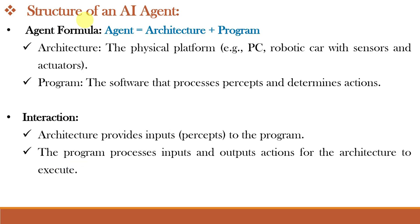An AI agent is made up of two parts: architecture and program. Let us understand the architecture first. As the name suggests, architecture means hardware — the physical parts like sensors, cameras, motors, etc. — parts that interact with the real world.